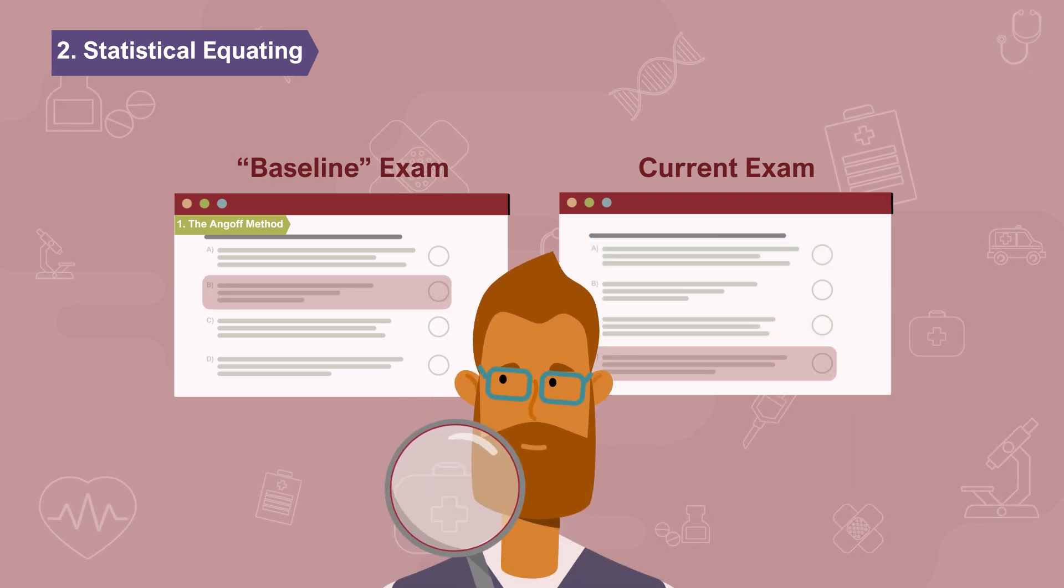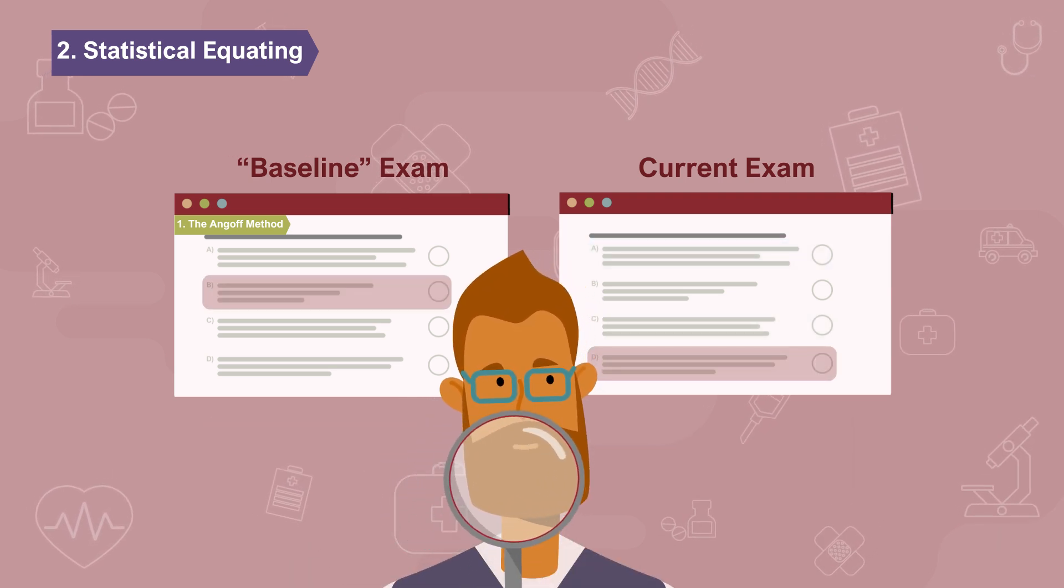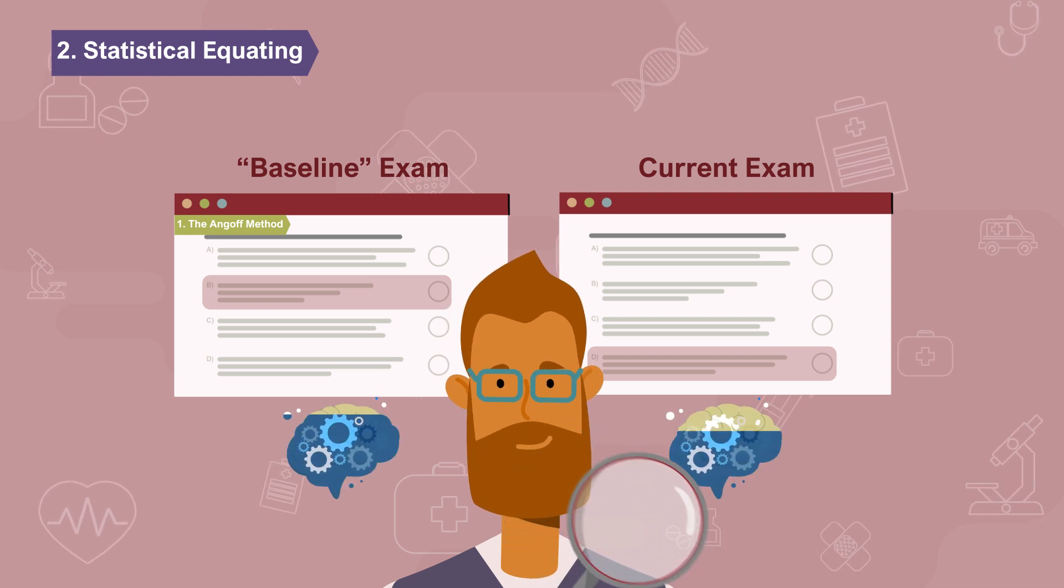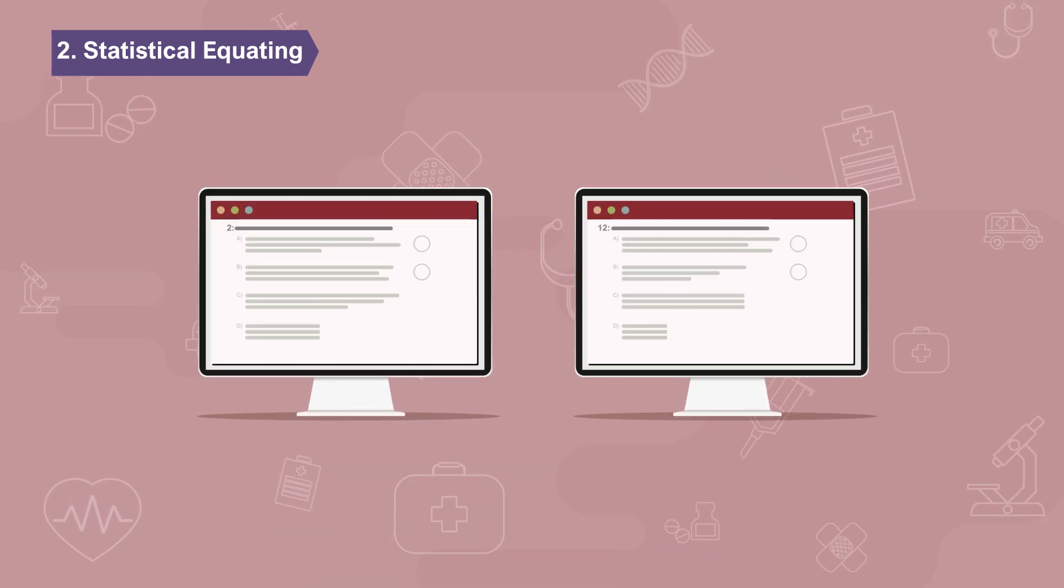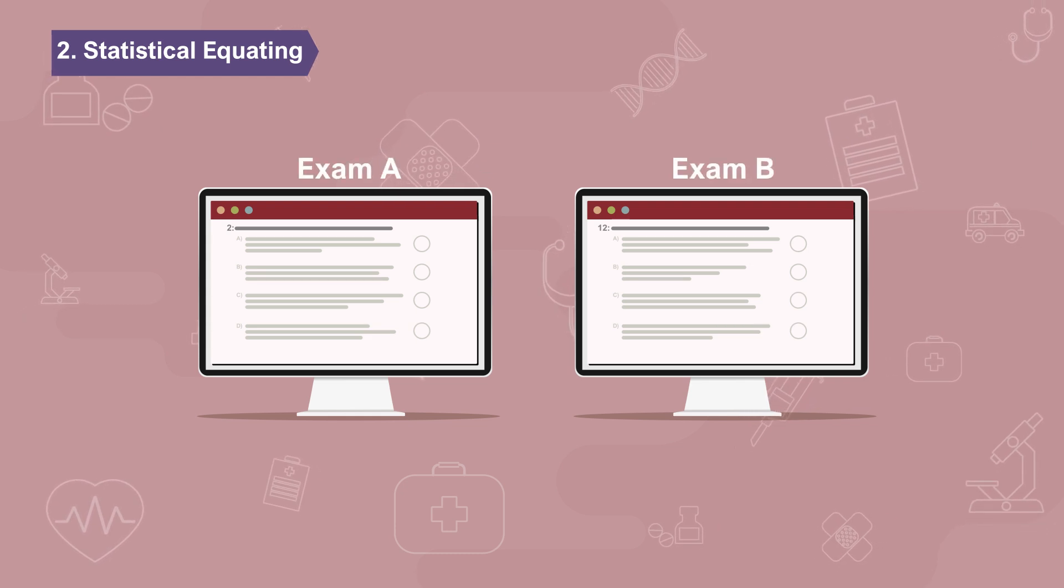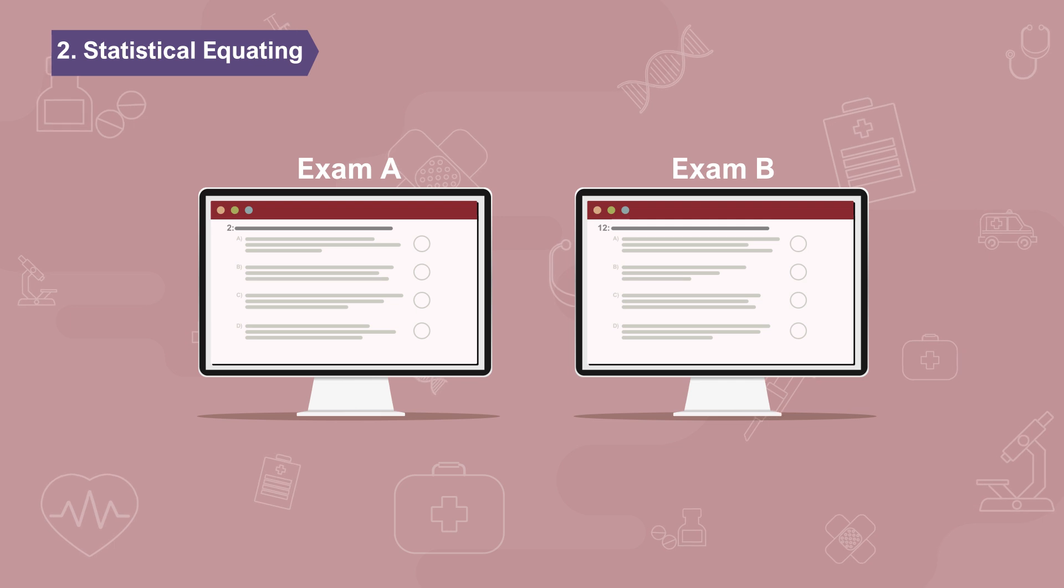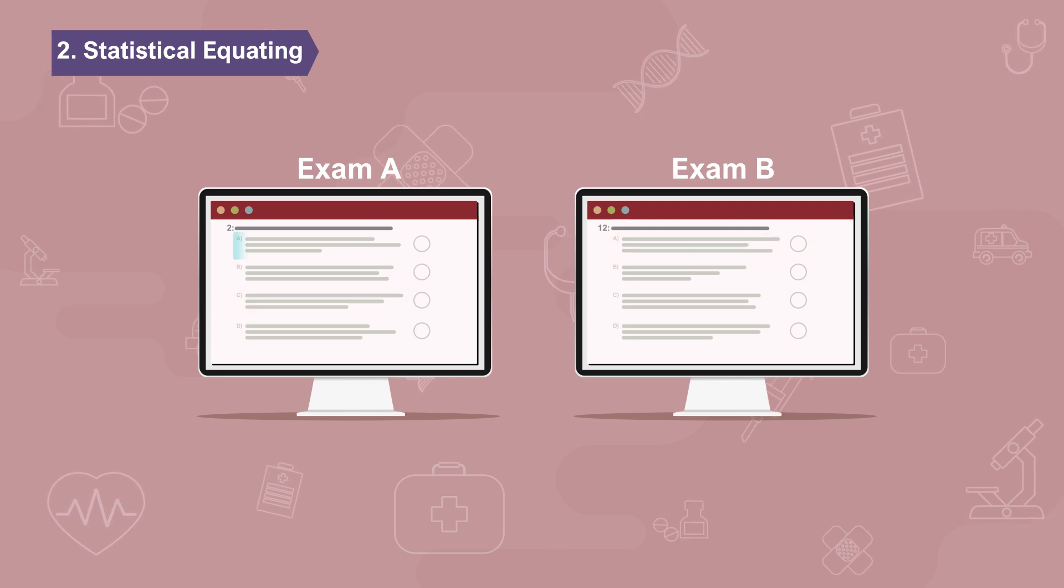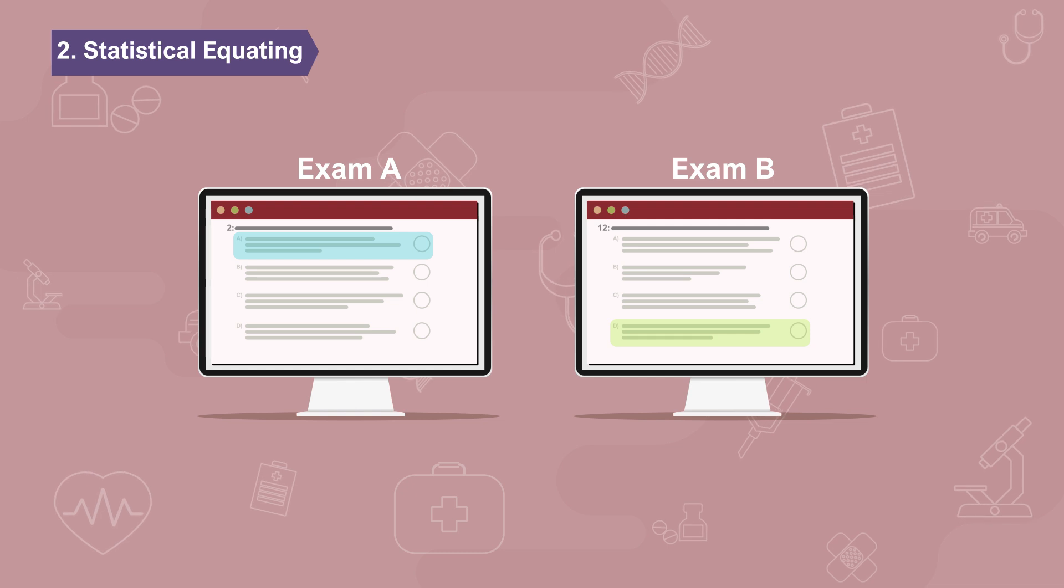Psychometricians look at the baseline questions, which are exactly the same on the two exams, to determine the difference in candidate competence. Let's use an example where we have two exams, exam A and exam B. On both exams, there are two sets of questions: common questions, which are the same on both exams, and unique questions, which differ between exams.